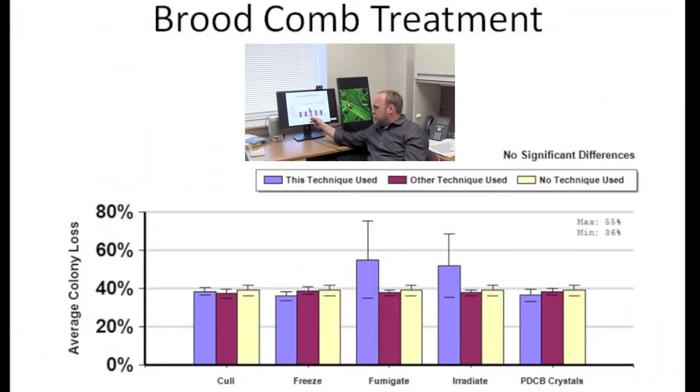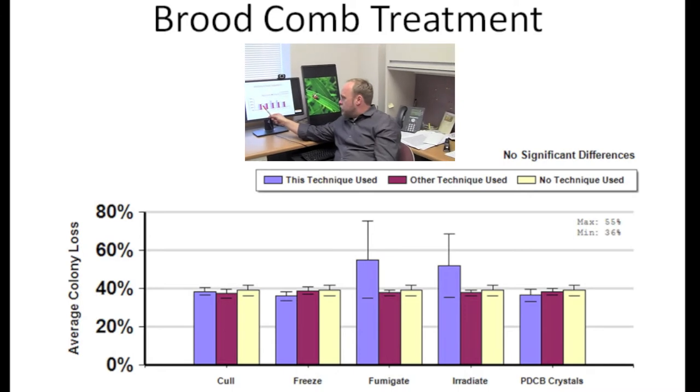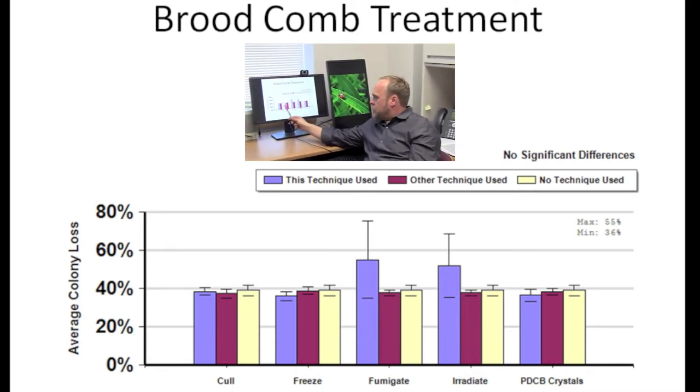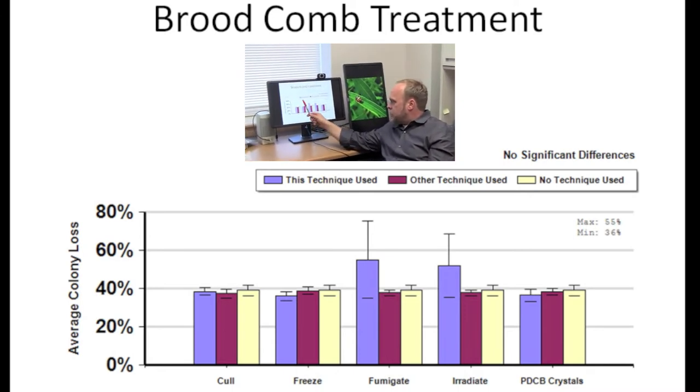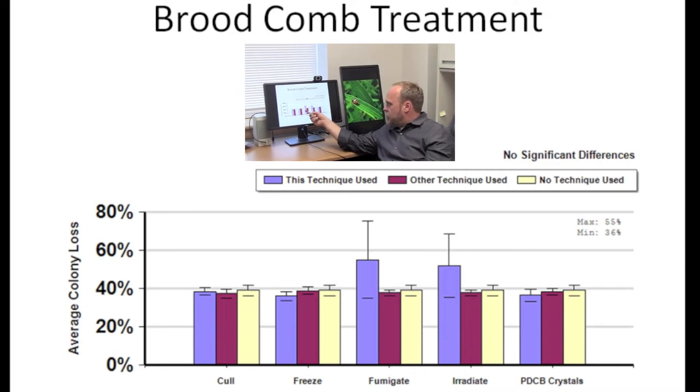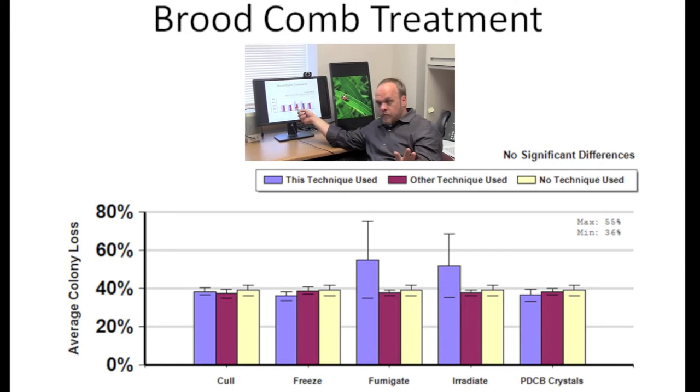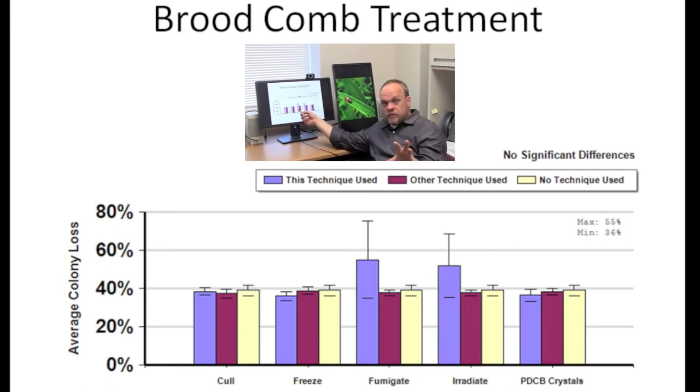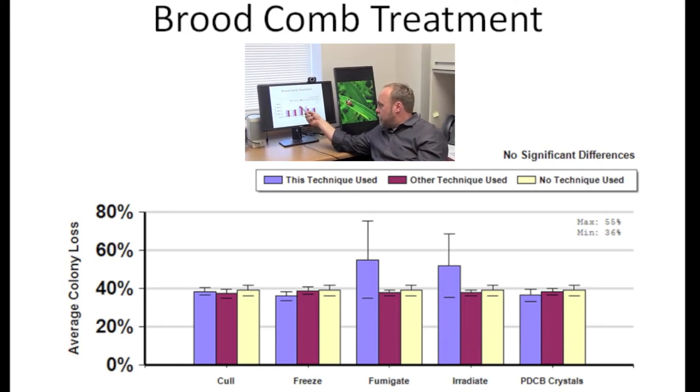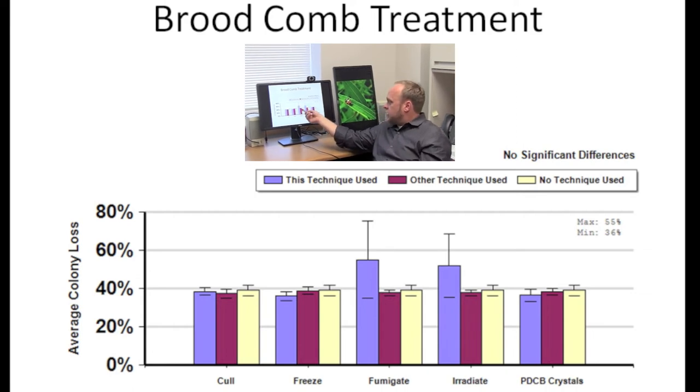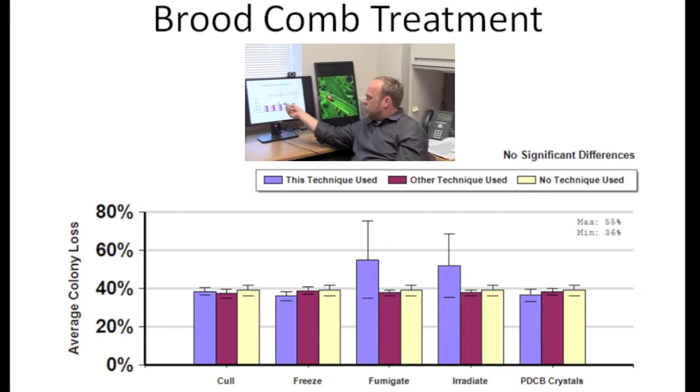What you can see is there was basically no difference between those who use no technique and used one of the given techniques. Very few people indicated they fumigated with acetic acid, which we know kills nosema spores. But that's why there's a large variance there. And again, these high peaks for those may be indicative of the people who have really big problems were most likely to fumigate or irradiate their equipment.